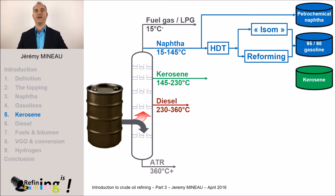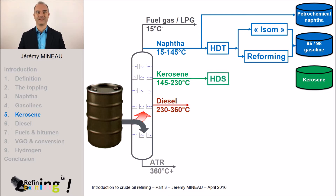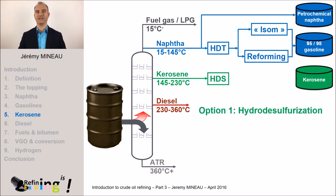To get rid of these mercaptans, we have two options. The first option is radical. The idea is the same as for removing the sulfur in the naphtha — using hydrogen. This method has the advantage of removing 100% of the sulfur, whether it is mercaptans or not. It is thus luxurious, but very effective.